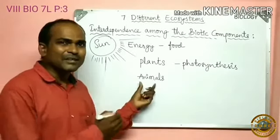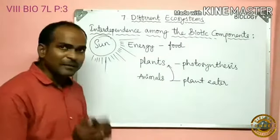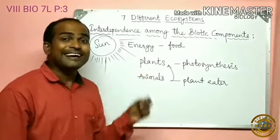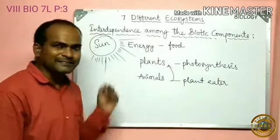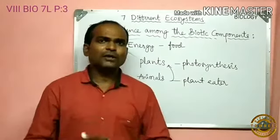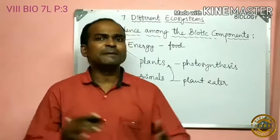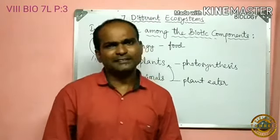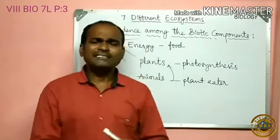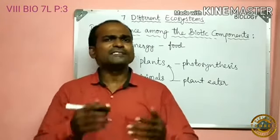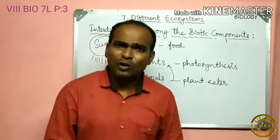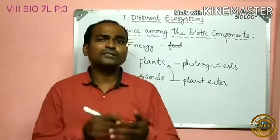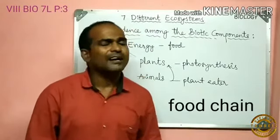Animals get their energy from plants. Some animals do not eat plants directly, but they are still indirectly depending on sunlight. So the energy from sunlight is transmitted to all living organisms on the earth. When scientists describe the way energy moves from organism to organism in the ecosystem, they use the term food chains.